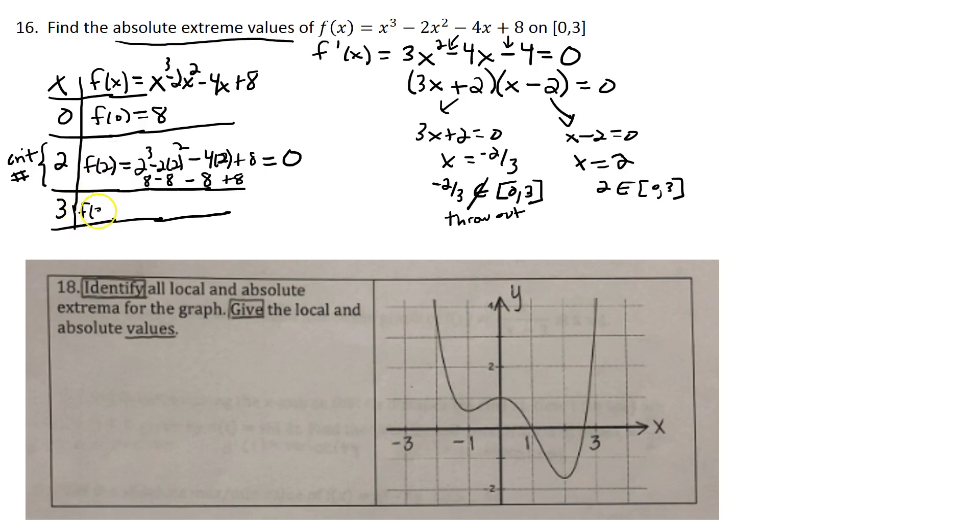And then finally we'll plug a 3 in. 27, 3 cubed minus 2 times 3 squared minus 4 times 3 plus 8. That's 27 minus 18 minus 12 plus 8. 27 minus 18 is positive 9, minus 12 is negative 3, negative 3 plus 8, I believe you get a 5 out of that. Yeah, it's a 5.